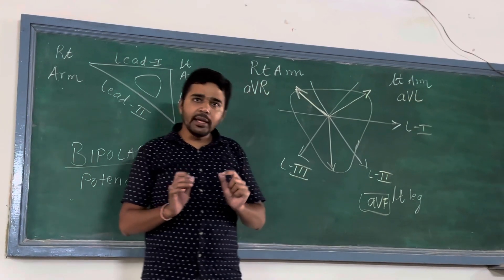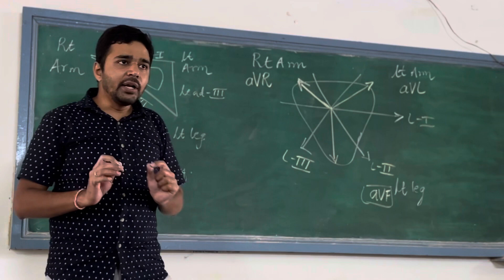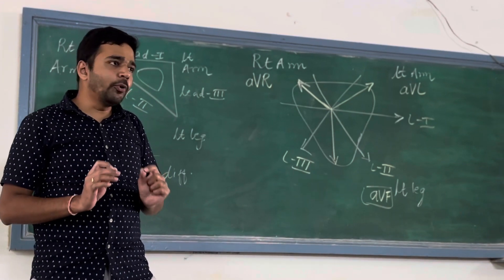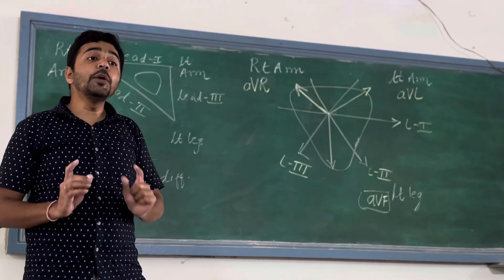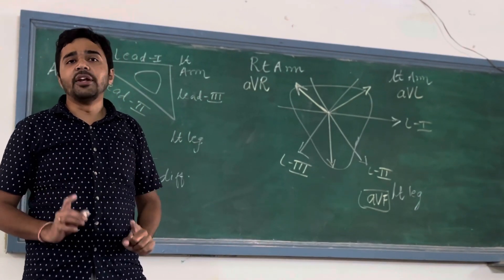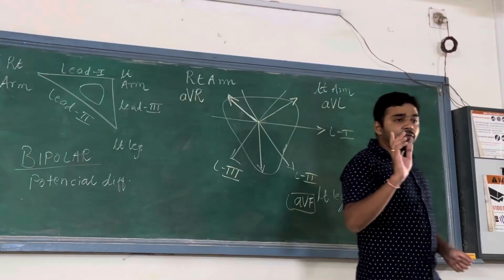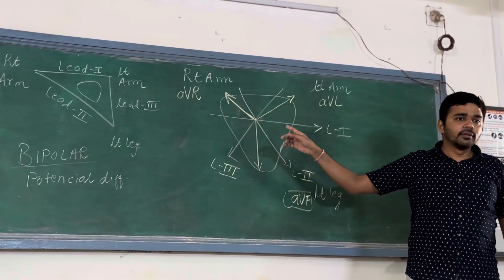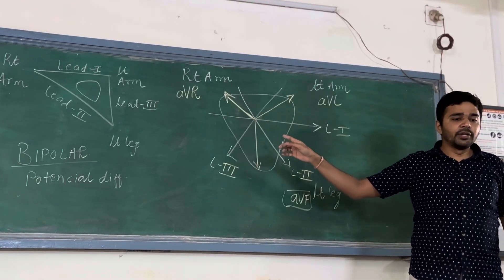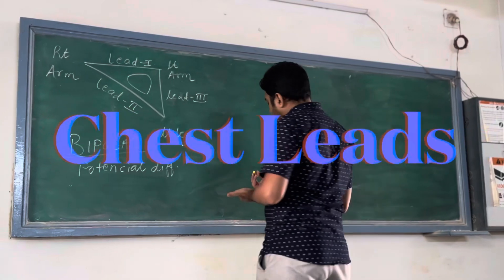Now, bipolar limb leads and unipolar limb leads are clear. Now we will learn about unipolar chest leads. First of all, draw the rib cage for explanation.